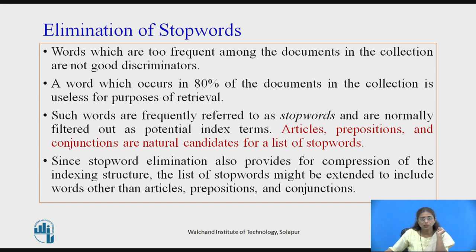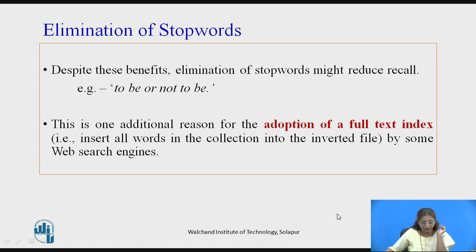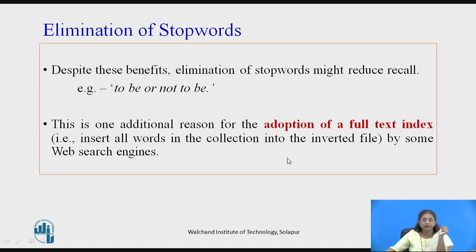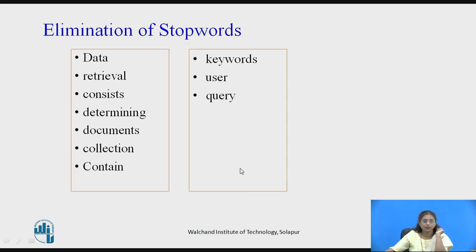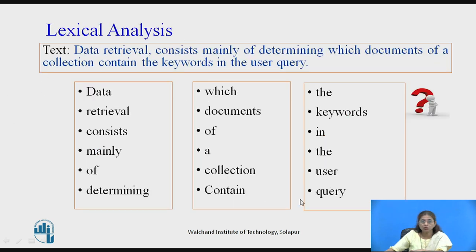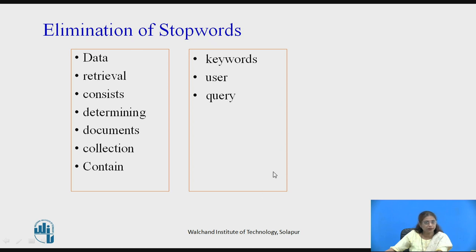When these words are removed, the vocabulary is reduced — this provides compression of the text. The list can be extended to include articles, prepositions, and conjunctions. However, consider the query 'to be or not to be' — if all stop words are removed, only 'be' remains, which does not serve the purpose. This is one reason why search engines are adopting full text indexing, so that the most relevant documents are given to the user. After lexical analysis, the generated tokens with these prepositions and articles removed are the remaining terms used for further processing.